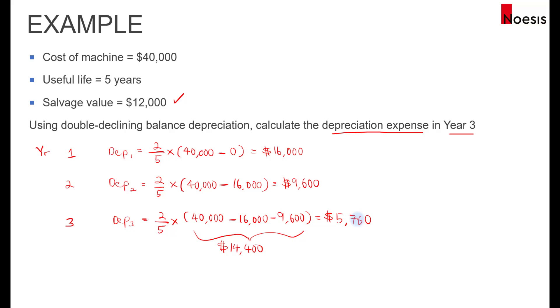So if we were to take $14,400 minus $5,760, we would end up with a net book value of $8,640. If we were to continue to do this without checking the net book value, your net book value by the end of year 3 will be $8,640, which is well below the salvage value of $12,000.